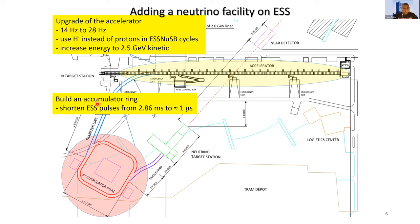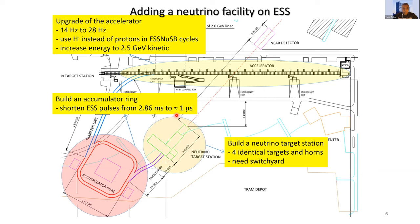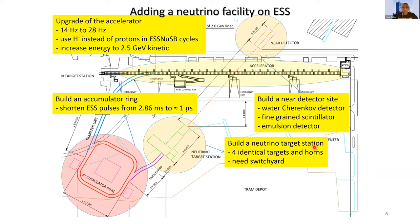We will use an accumulator ring to shorten the ESS pulses from 2.86 milliseconds to approximately one microsecond. We will need to build a target station facility to focus the produced secondary hadronic beam and eventually the neutrino beam, and we will need to build a near detector site.